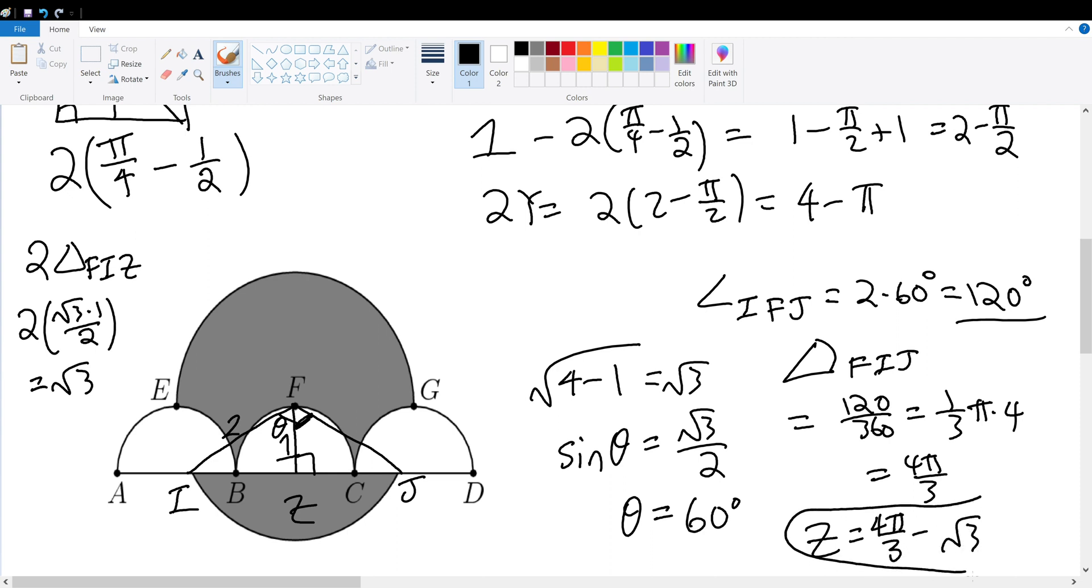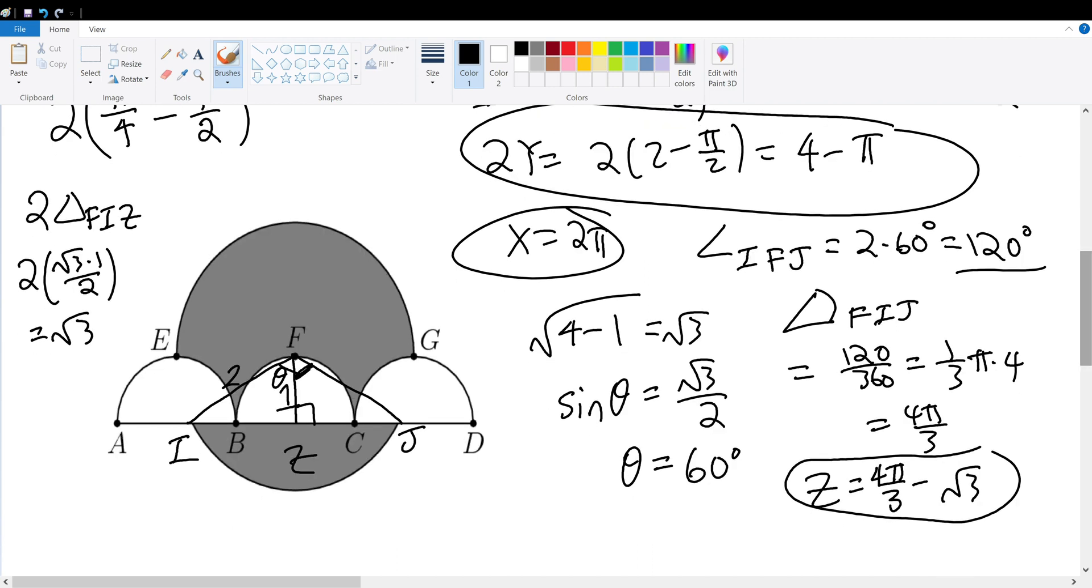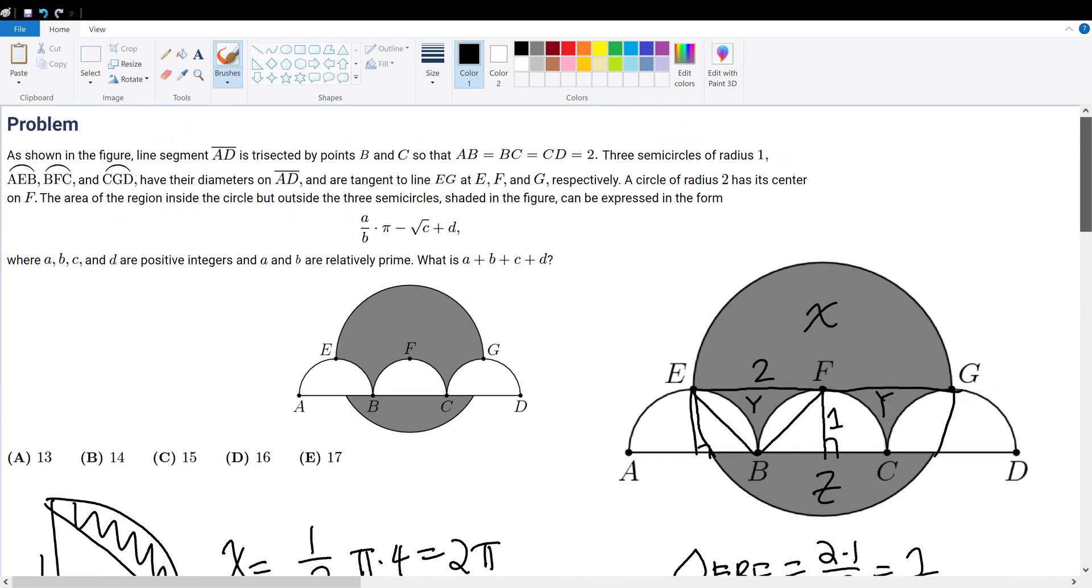So we have Z's area, we have 2Y's area, and we have X's area, which is just 2 pi. We sum them up and we will get our final answer. So let's do that. So 4 minus pi plus 2 pi plus 4 pi over 3 minus root 3 would give you 4 minus root 3 plus pi plus 4 pi over 3, which gives 4 minus root 3 plus 7 pi over 3. So we've simplified this to its fully reduced form.